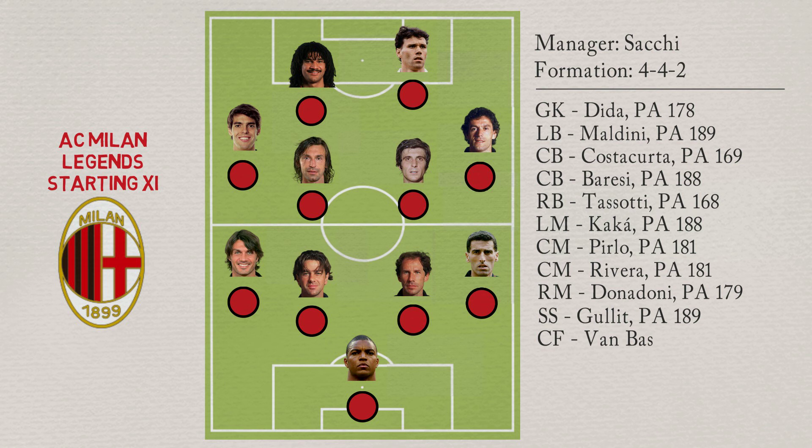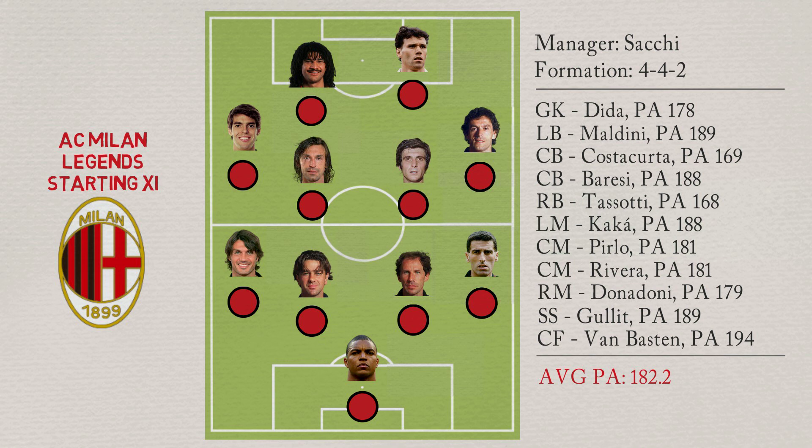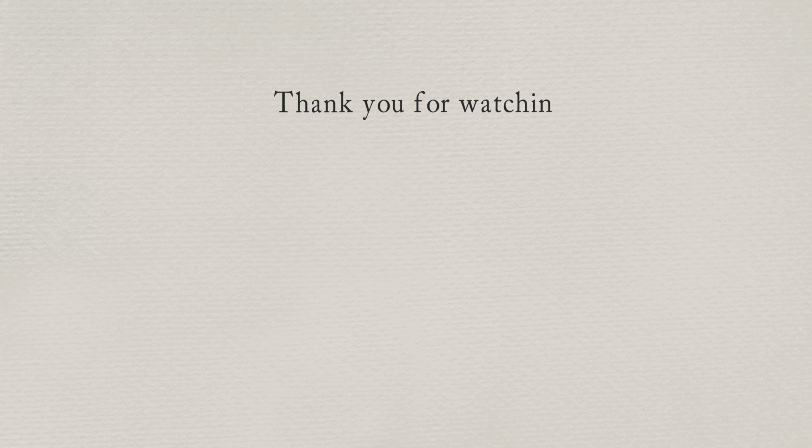The Milan Legends starting 11's average potential ability is 182.2. Don't forget to let me know in the comments section below which is your favorite Milan Legends starting 11, and what are the reasons for your choice. Thank you for watching — consider leaving a like if you enjoyed the video, and subscribe for more content like this one.